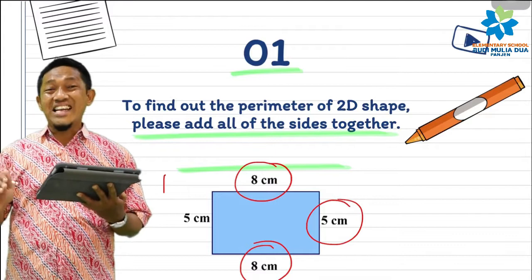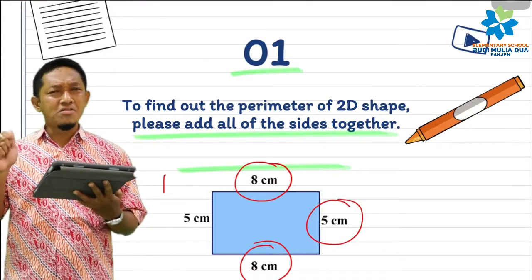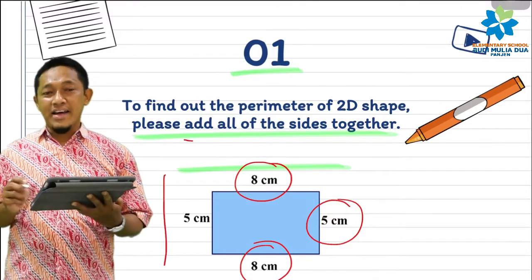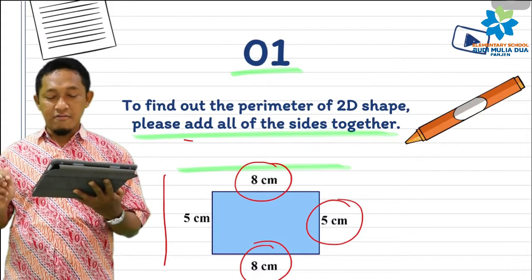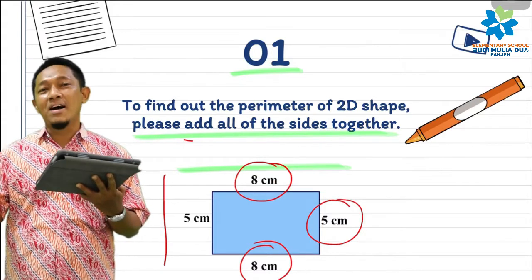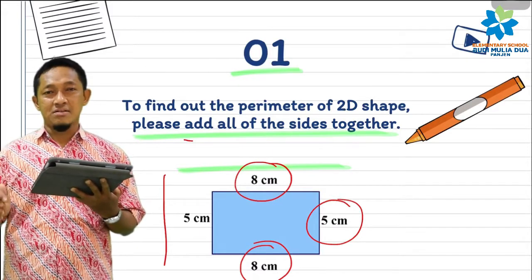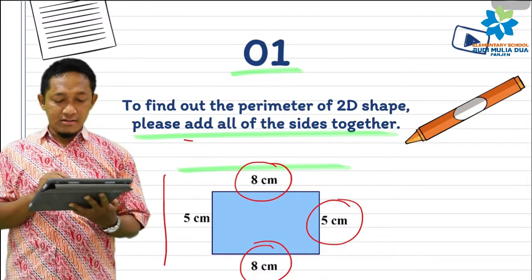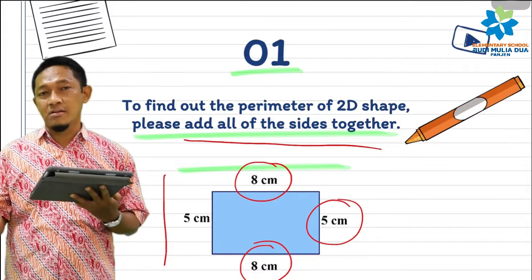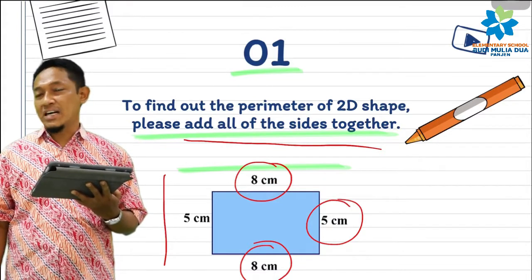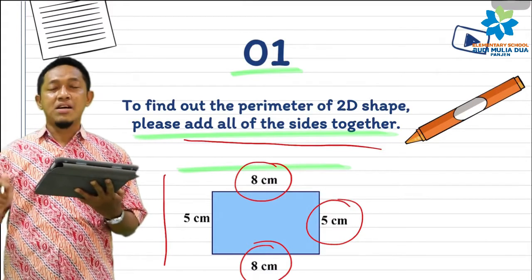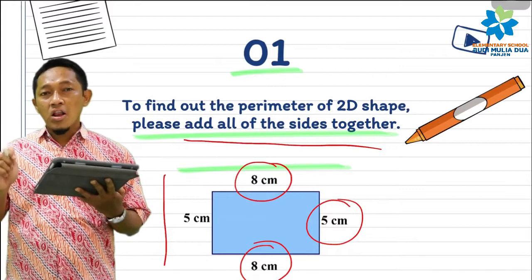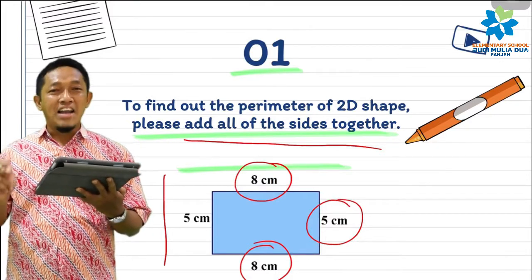I hope you still remember - to find out the perimeter, you just add all of the sides together. Just add all the sides. For example, this is the picture of a rectangle with length of 8 centimeters and width of 5 centimeters. Can you find out the perimeter? Easy! Please add all of the sides together. The order doesn't matter - you can start with length or width, it's okay. But the keyword is: add all of the sides together. Don't miss any sides. If you don't know a side length, find it first, then add it.